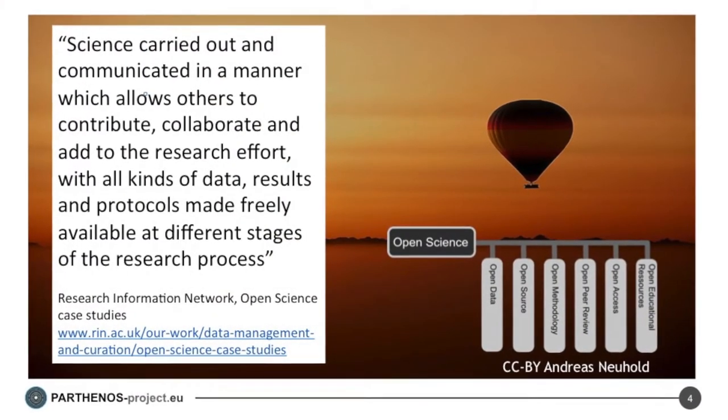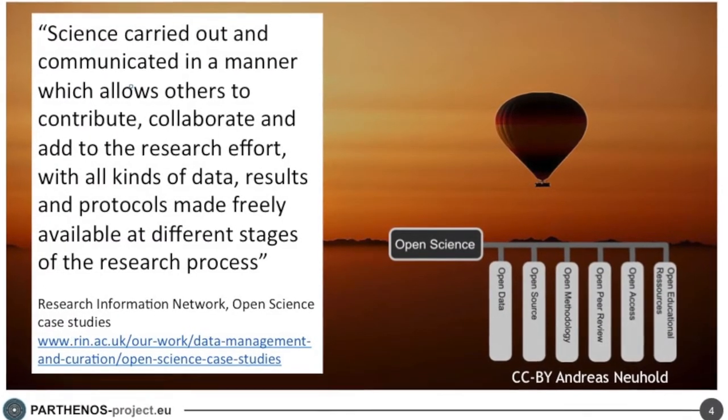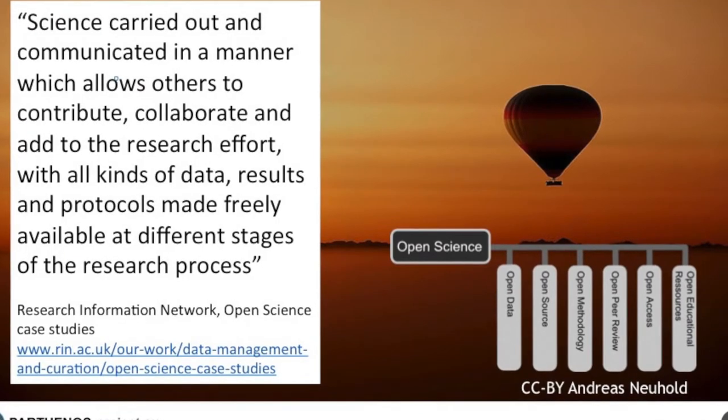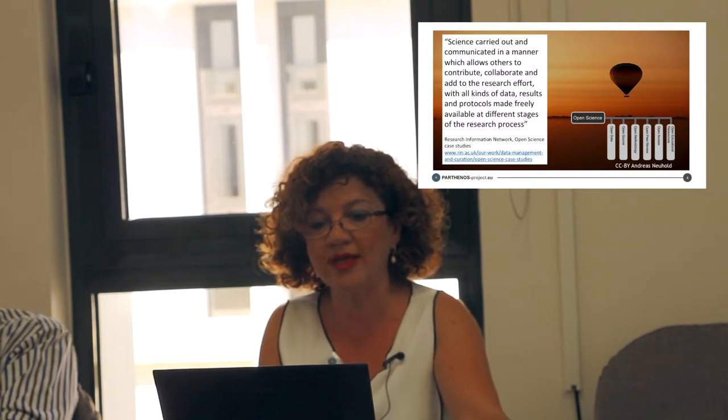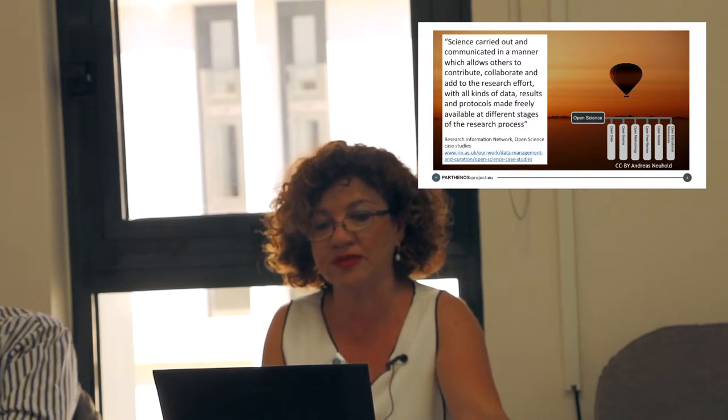Science carried out and communicated in a manner which allows others to contribute, collaborate and add to the research effort, with all kinds of data, results and protocols made freely available at different stages of the research process, is the definition of the Research Information Network in the UK. This definition captures the systemic change to the way science and research have been carried out for the last 50 years, shifting from the standard practice of publishing research results in scientific publications towards sharing and using all available knowledge at an earlier stage in the research process.